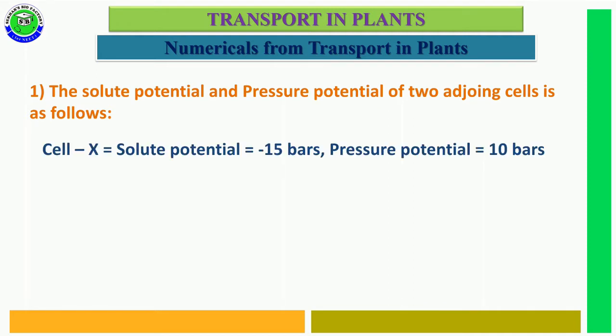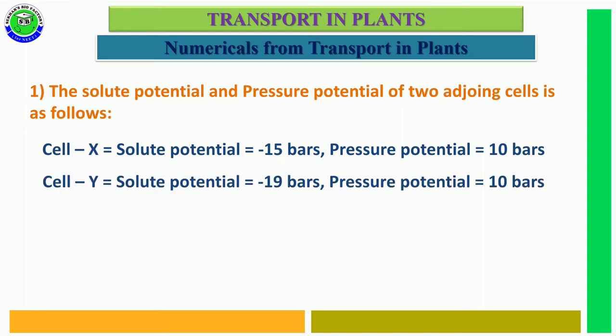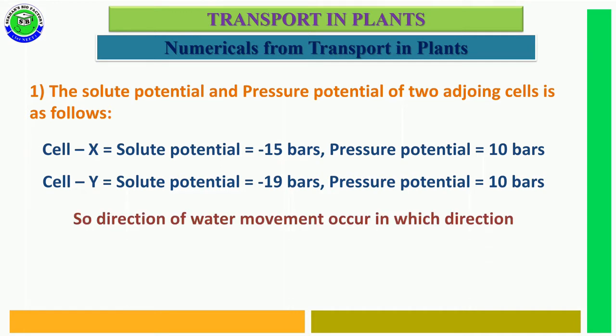Cell X has solute potential equal to minus 15 bars and pressure potential equal to 10 bars. Cell Y has solute potential equal to minus 19 bars and pressure potential equal to 10 bars. The question asks: in which direction does water movement occur?